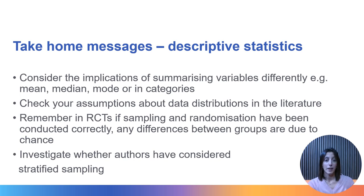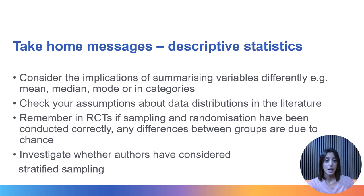When you note a difference in distribution, consider whether it might affect the quality of the research. For example, is it problematic if age differs between the intervention and control group, or if more females are in the intervention group than males? Always check your assumptions with the literature. It's also important to remember that with randomized control trials, if the sample size calculation is appropriate and allocation to groups is correct, any differences in outcomes between groups should be due to the intervention rather than group characteristics. Stratified sampling — separate randomization of subgroups by age or gender — can further reduce imbalance between groups.